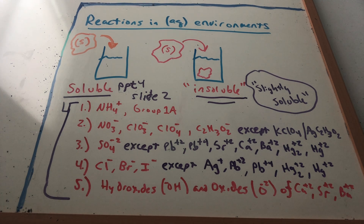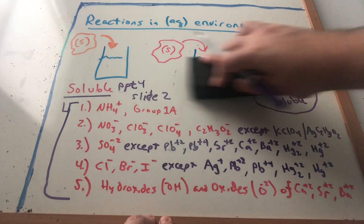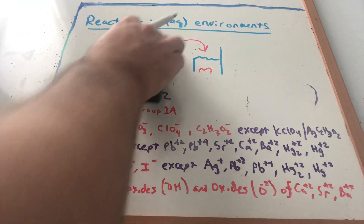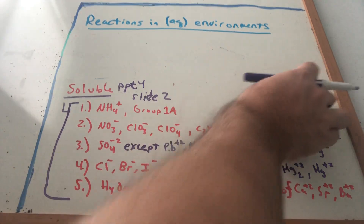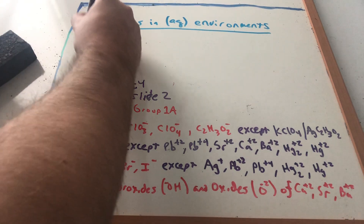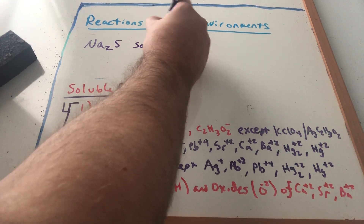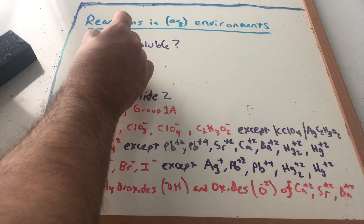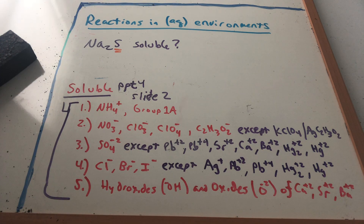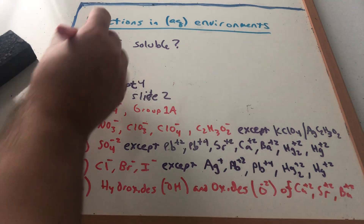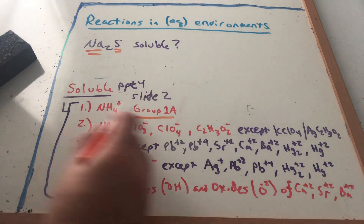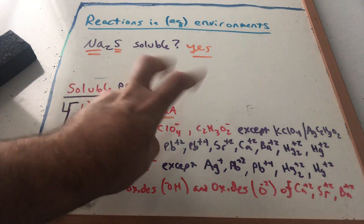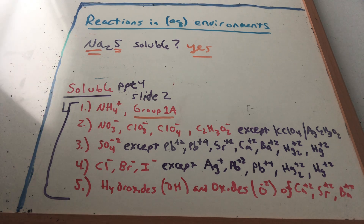For example, rule number one: anything with ammonium or a Group 1A metal is soluble. If I ask whether Na2S is soluble, here's the thought process: I look at both ions. S isn't listed anywhere in the guidelines, but Na is a Group 1A metal. If it fits a category, it is soluble. So when I put this salt in water, we expect it to dissolve into its ions: two Na⁺ and one S²⁻.